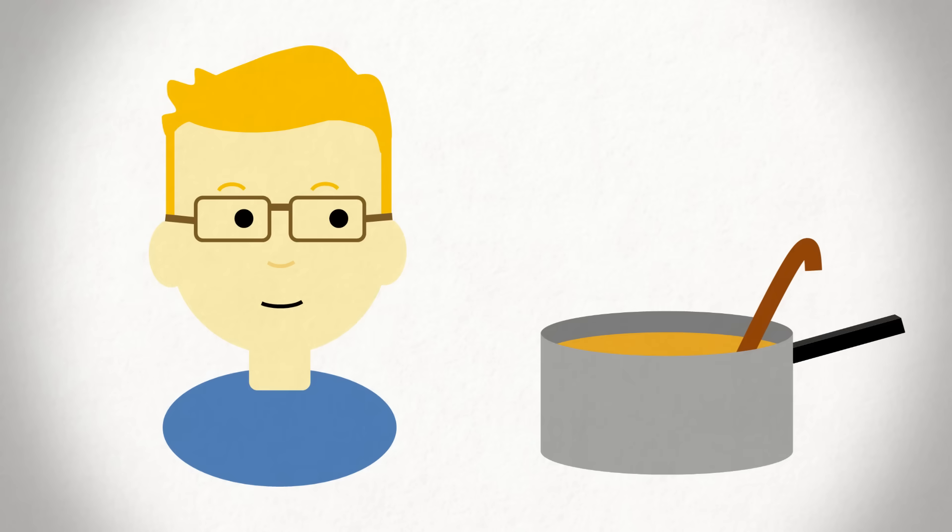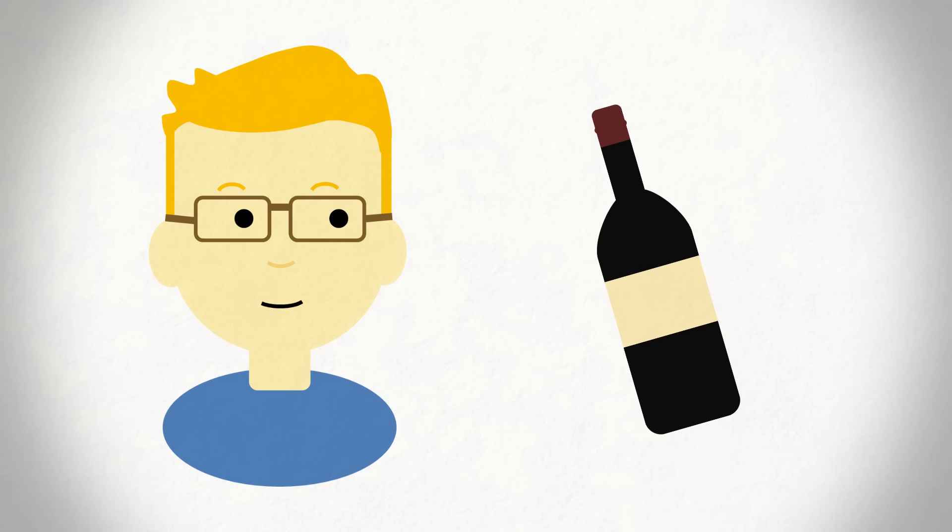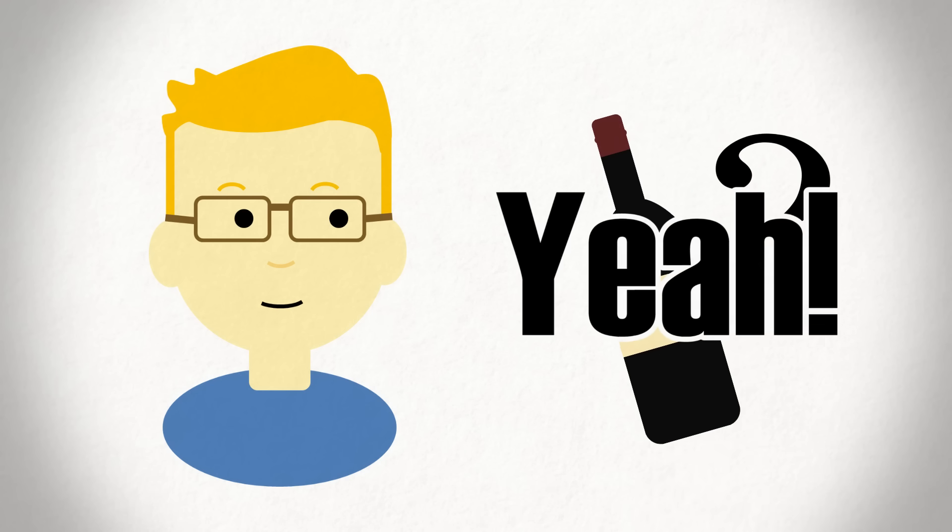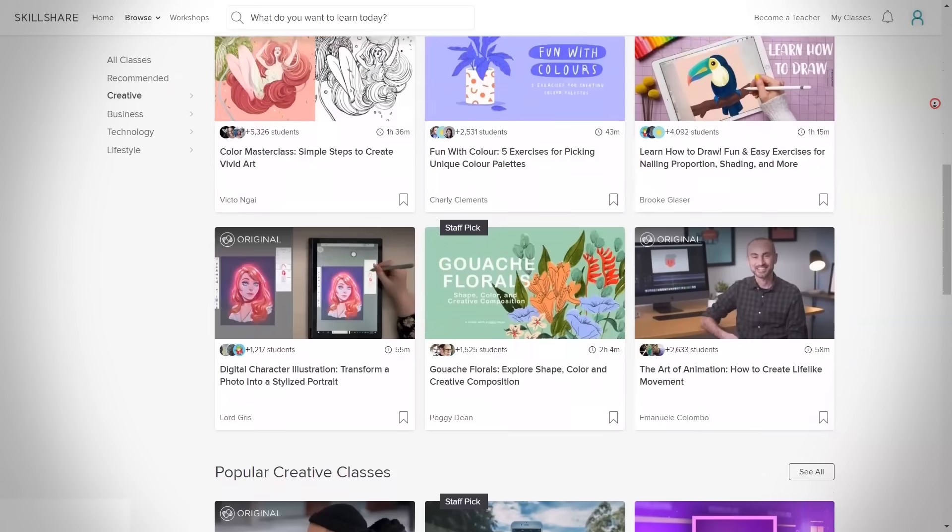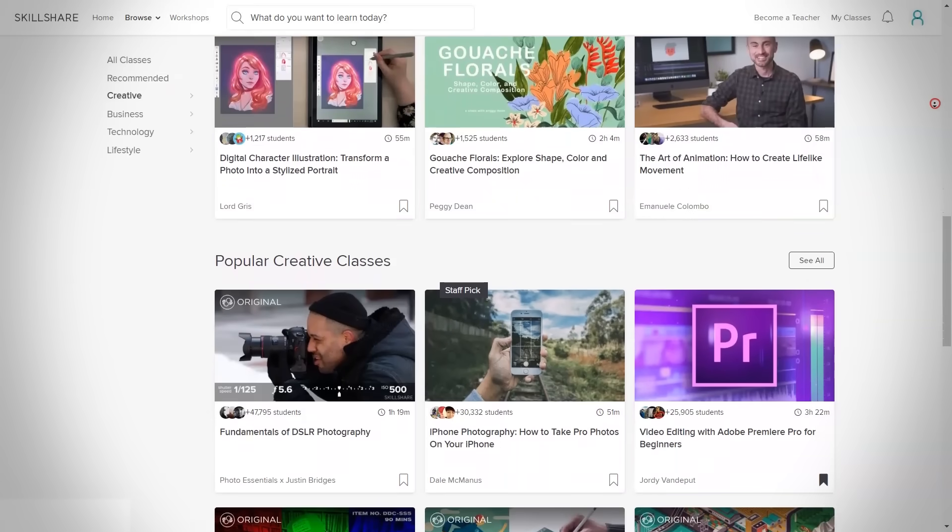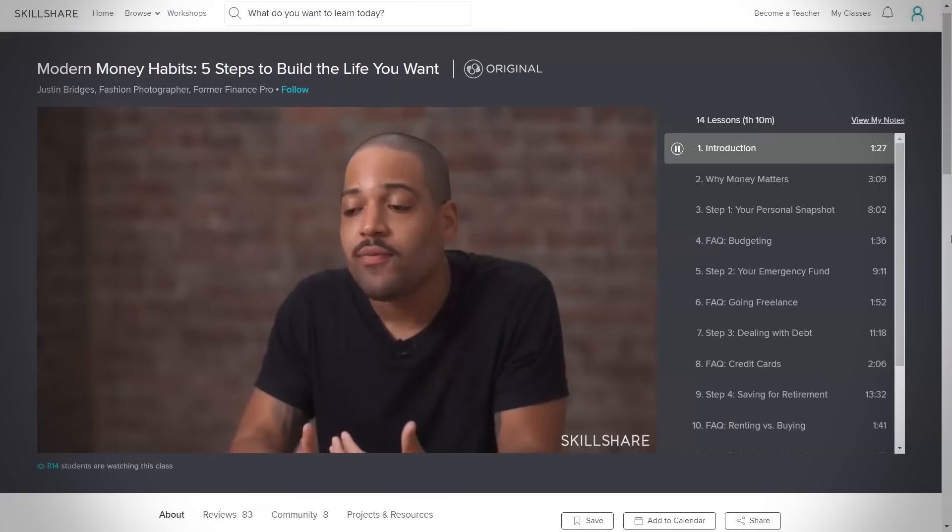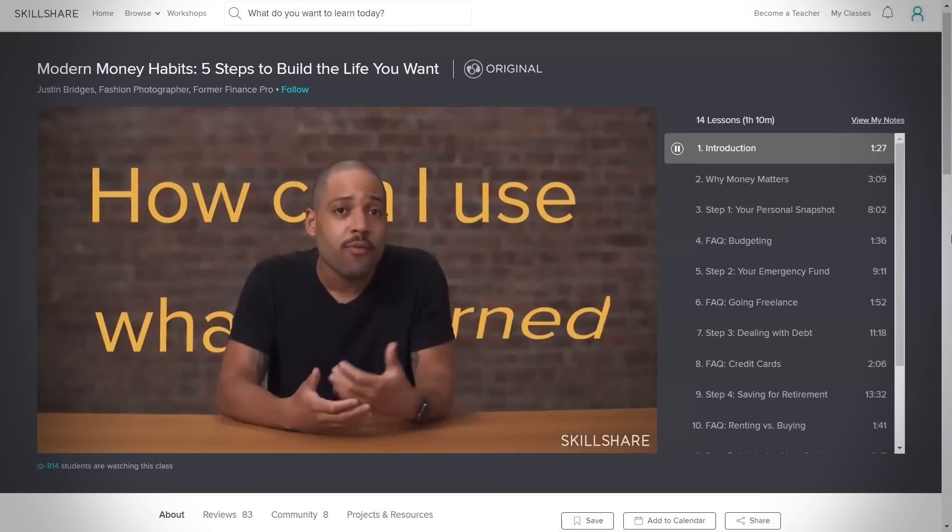Want to learn coding? Great! How about cooking? Sure thing. Wine tasting? Yeah, that's on there too, actually. And honestly, there's more than can be listed. A great one on the topic of finance is Modern Money Habits: Five Steps to Build the Life You Want. A great start to finish discussion of money and personal finance. And hey, if you're not sure where to start, why not begin with How to Learn: Strategies for starting, practicing, and mastering the skills you've always wanted, which goes over learning methods.